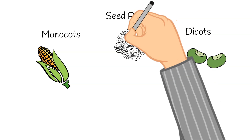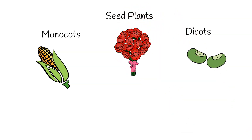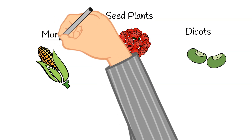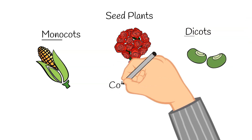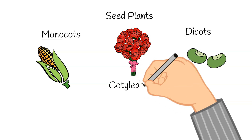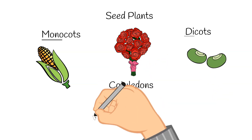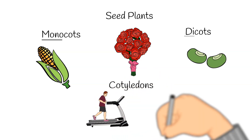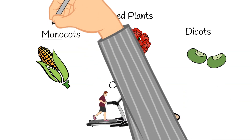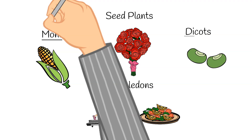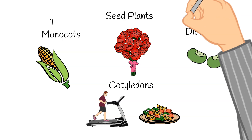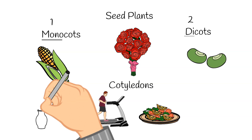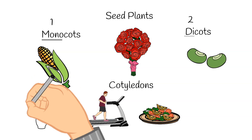Did you notice when looking at these words that they start with mono and di? Well, this means one and two, and they refer to how many cotyledons the plant's seed contains. Cotyledons are structures that provide energy and nutrients to a young plant — a cotyledon is a part of the seed that will grow into the first leaves of a plant. Mono means one, so monocots have only one cotyledon, and di means two, so dicots have two cotyledons.